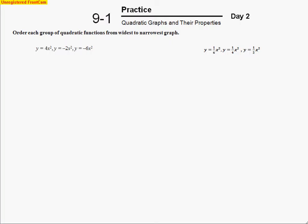This is the tutorial for Chapter 9, Section 1, Day Number 2: quadratic graphs and their properties. The first question is going to ask us to order each group of quadratic functions from widest to narrowest graph.